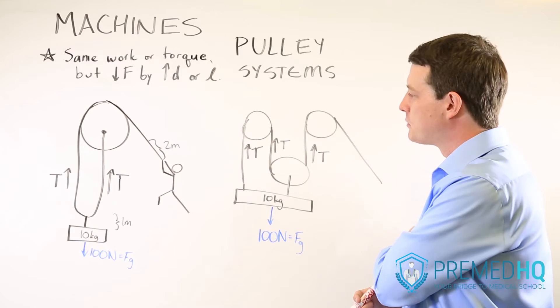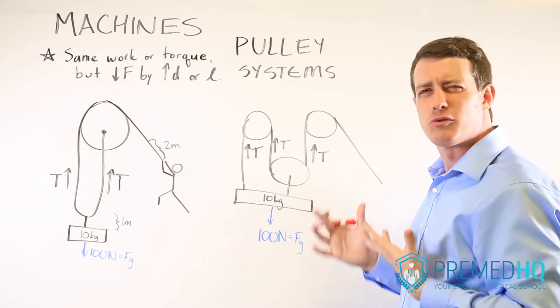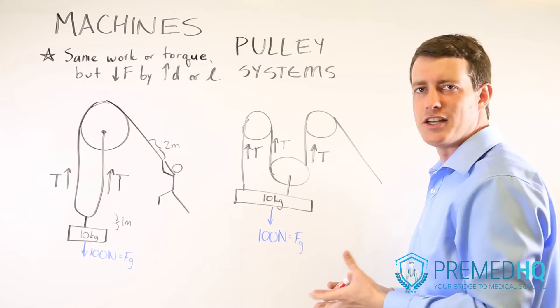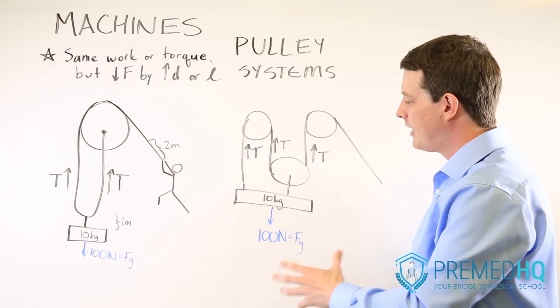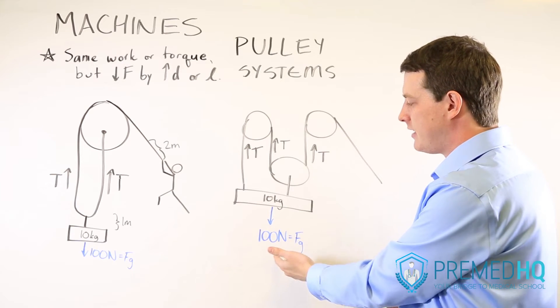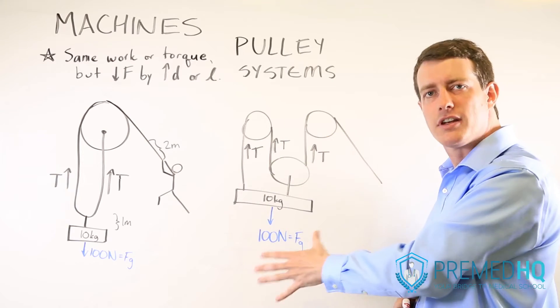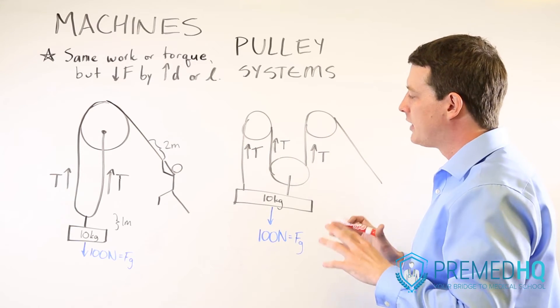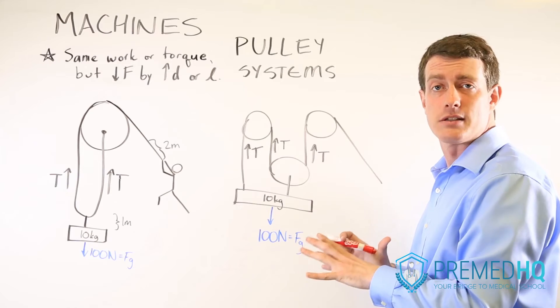So a person who's pulling on this will only need to create 33 point something Newtons of tension force, and that will be enough to resist the 100 Newtons of gravity that is pulling down on this object. And so that's the general principle of how pulley systems work.